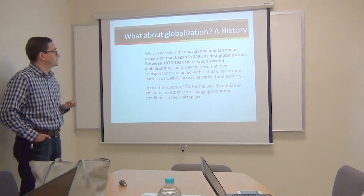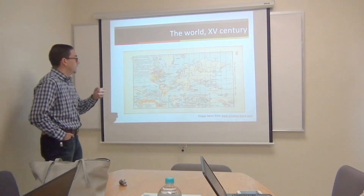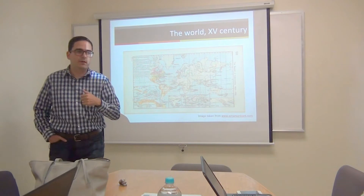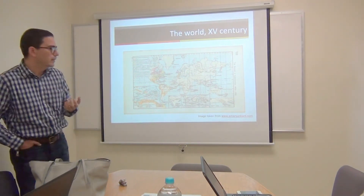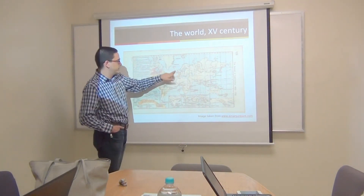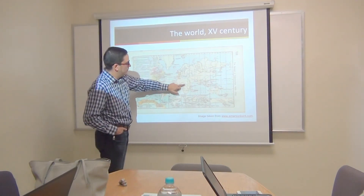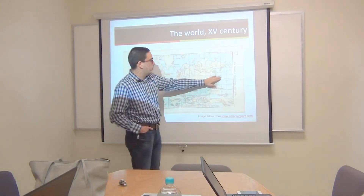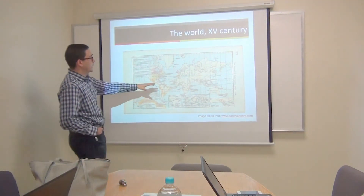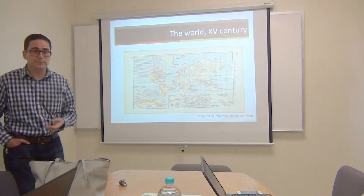This is a map of the 15th century when the European countries — or reigns, as they were called then — began to expand around the world, mainly in America, the coast of Africa, and southern Asia. With their expansion began the expansion of commerce and trade.